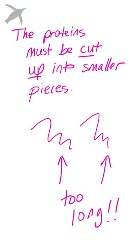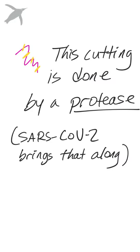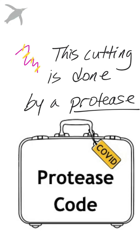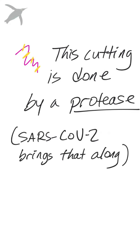Now before the proteins can do anything awful to us, they have to be cut up into smaller pieces first. The cutting is done by something called a protease, and the virus actually brings the code for this protease enzyme along with it when it infects the cell.